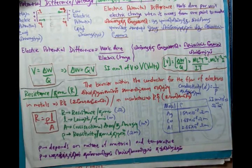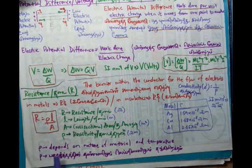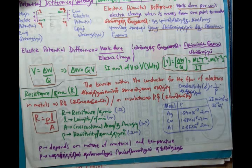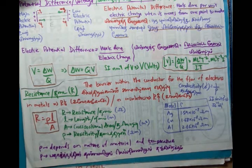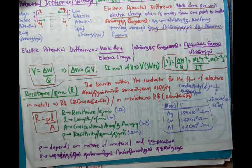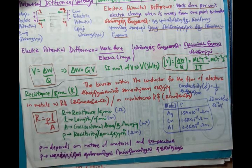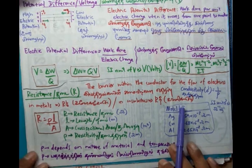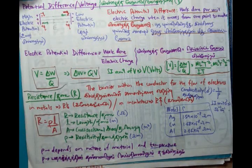So in the next, now we have already learnt that rho resistivity depends on nature of material and temperature. Now temperature is a key factor which affects resistance. So in the next lesson we will be discussing how resistance or resistivity rather changes with temperature.